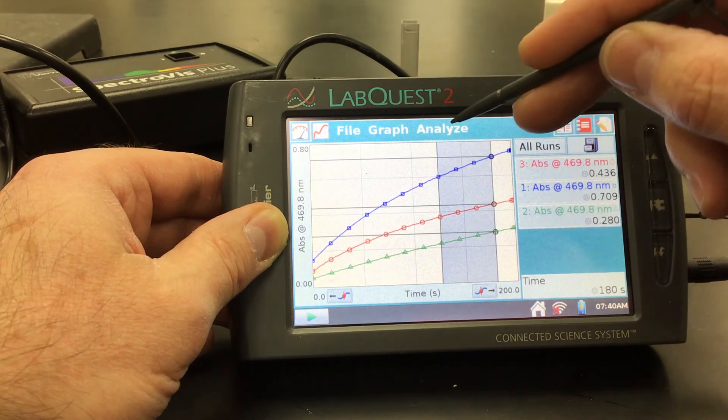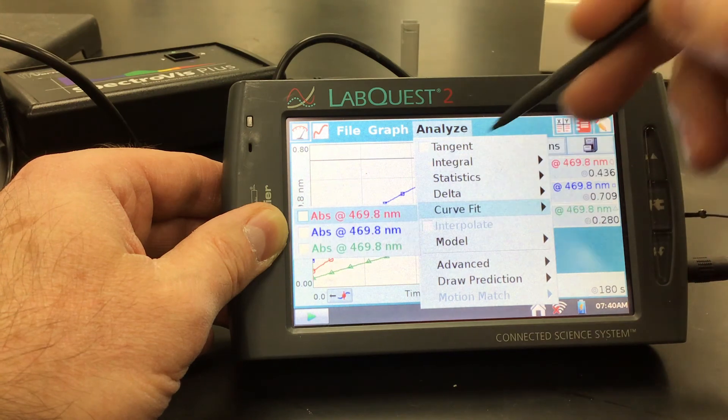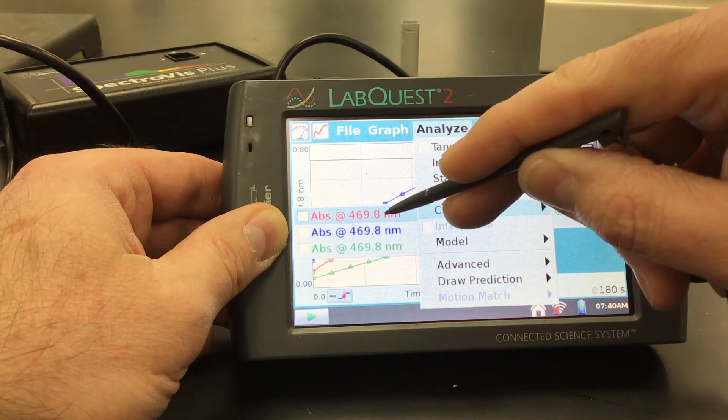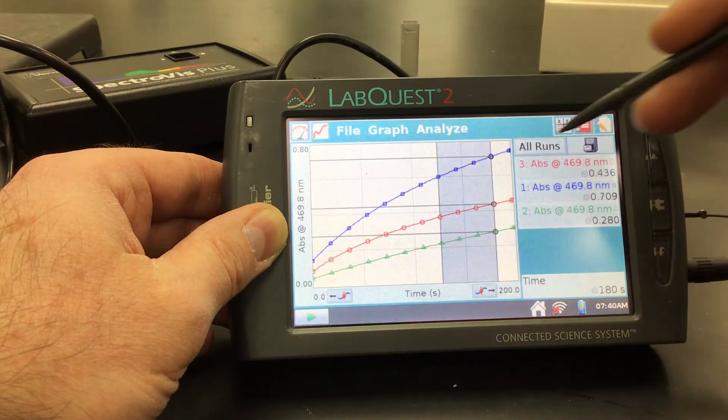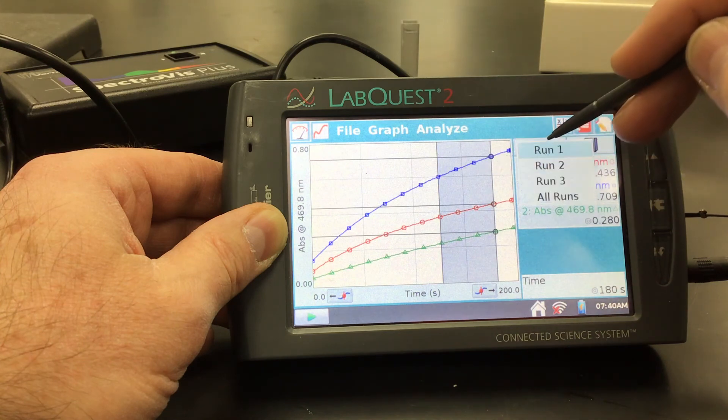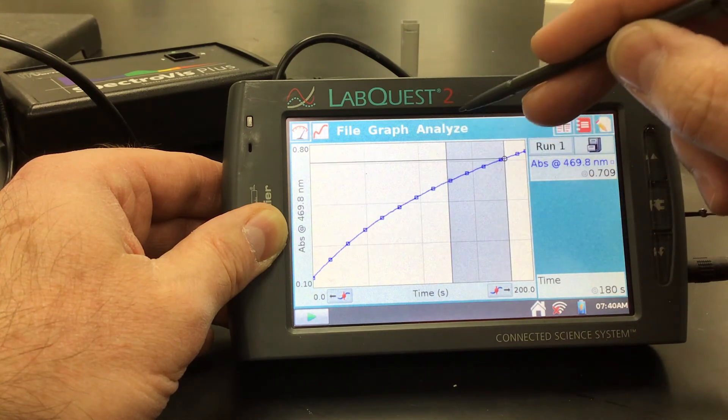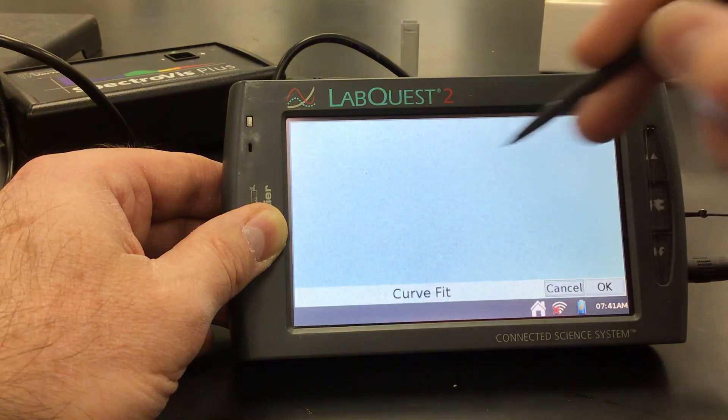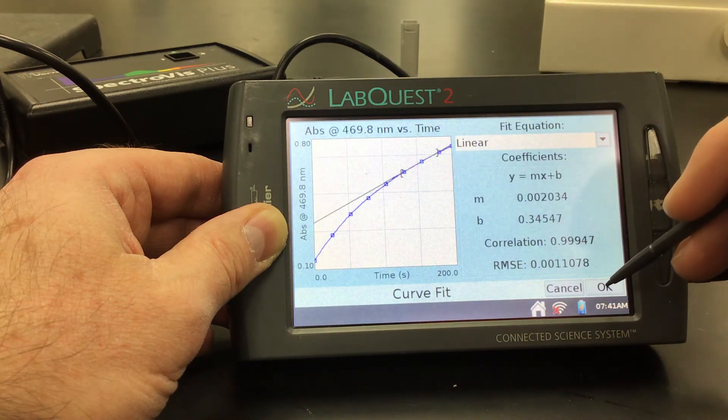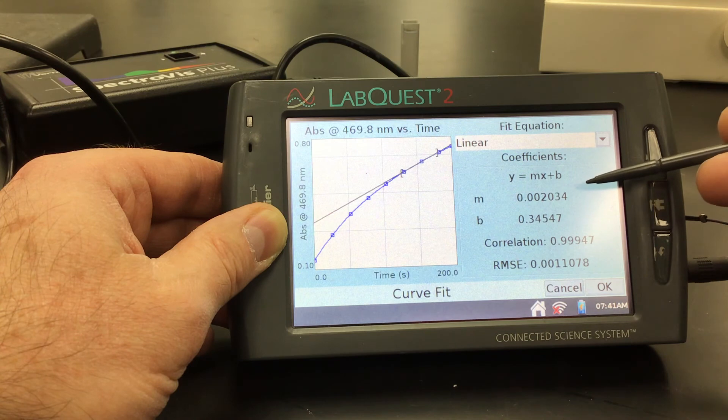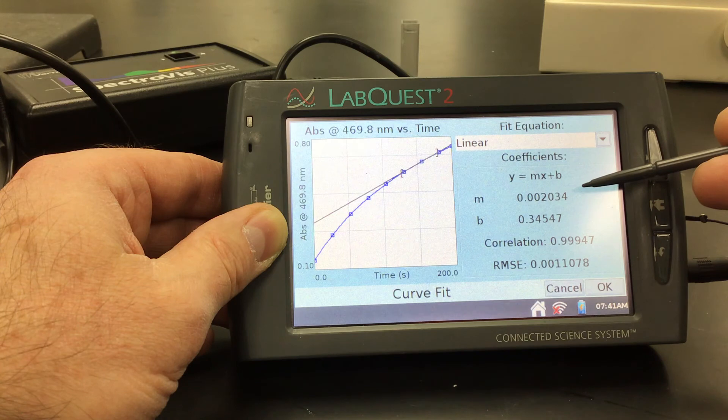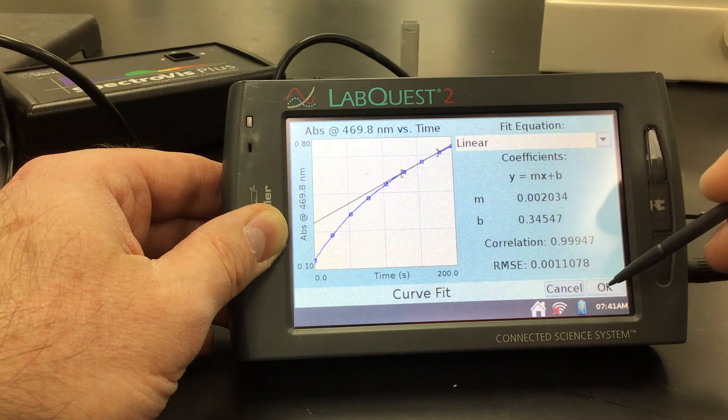So once we do that, what we can do then is analyze and then do a curve fit. And I'll just do the first one here and I'll do a linear fit. And this actually maybe is easier to see if we just show that like the first run here. And then, so the first run, let's do a curve fit to make it linear. And what we want to do is we want to record the slope. The slope is our initial rate. So for our first one, for our first run, we're going to record the slope or our initial rate as 0.002034. All right. That's going to be our first one there.